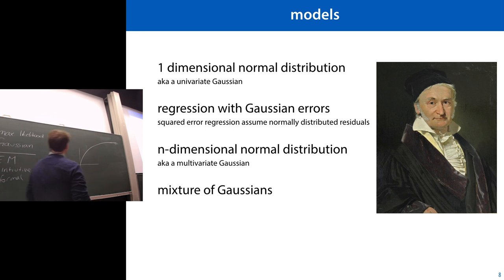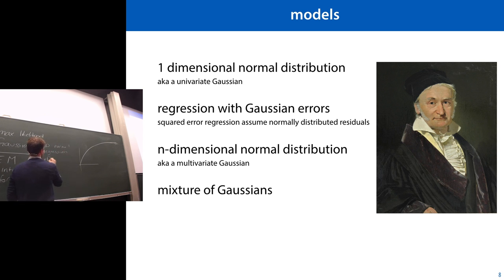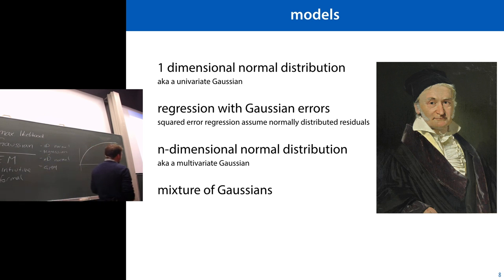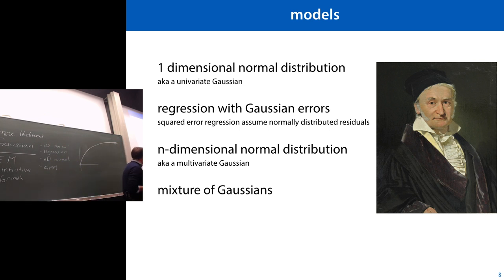Here are the four normal distribution models we're going to look at: the 1D normal distribution, the regression model, the N-dimensional (multivariate) normal distribution, and the mixture of Gaussians. The name Gaussian comes from Carl Friedrich Gauss, who invented these distributions — probably one of the top three mathematicians in history.